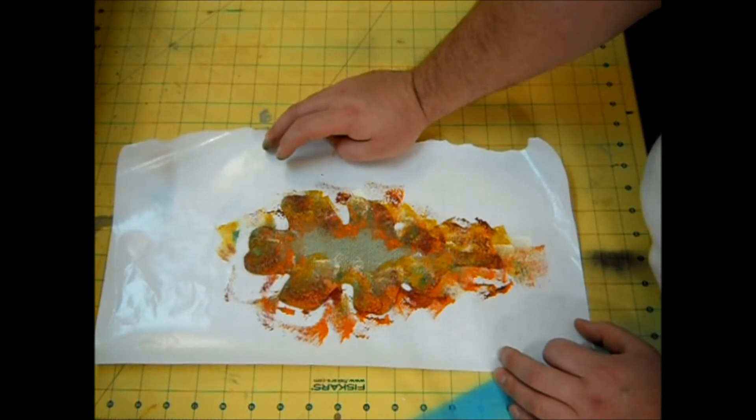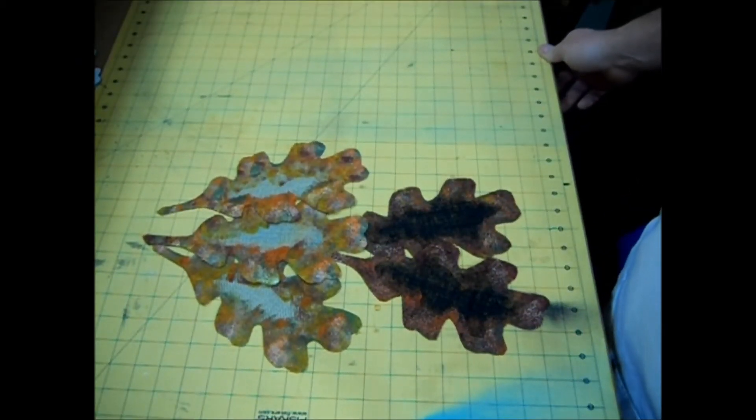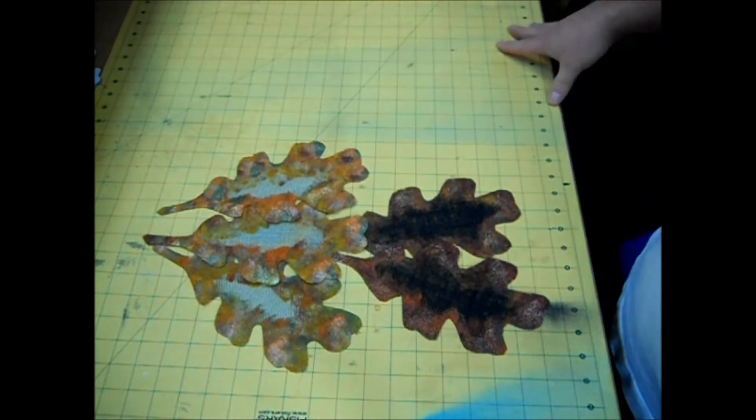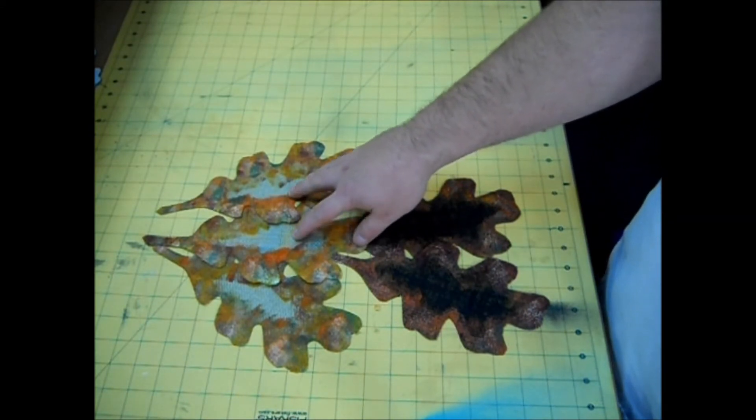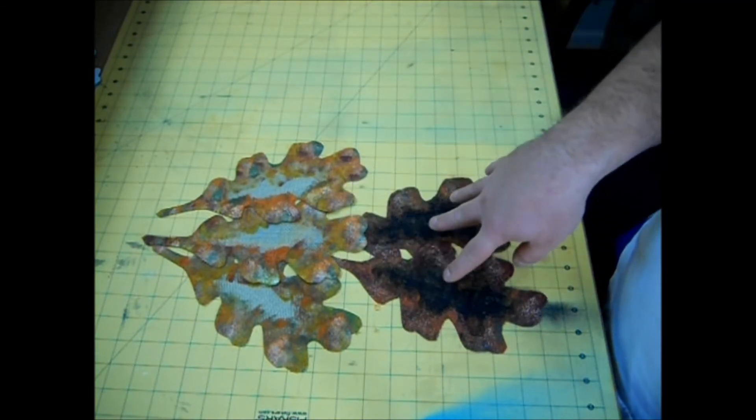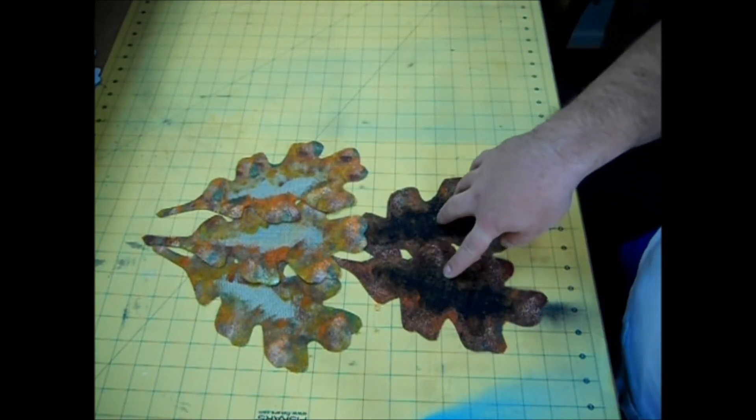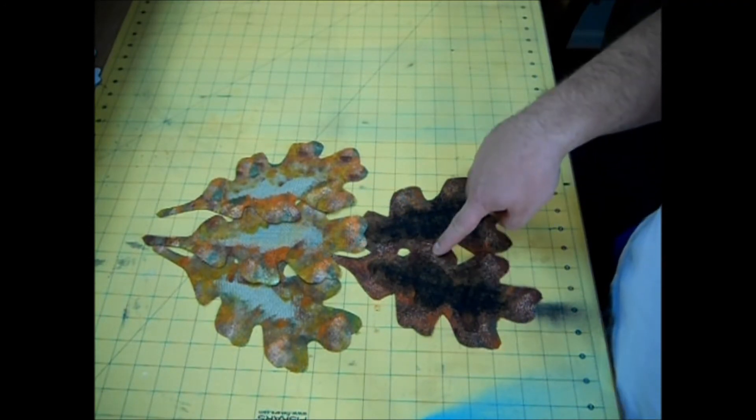When the paint on your leaf has dried, it should look something like this. I ended up doing five leaves. I did three in the neutral burlap color, and two in this dark brown color. I used the exact same paint combination, except on the darker browns I left out the green, just so it looks like it was further along in decomposition.